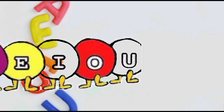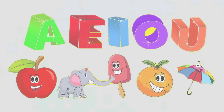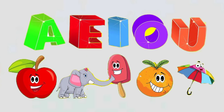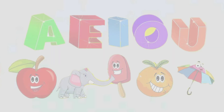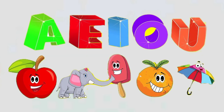U. A for apple. E for elephant. I for ice cream. O for orange. U for umbrella.